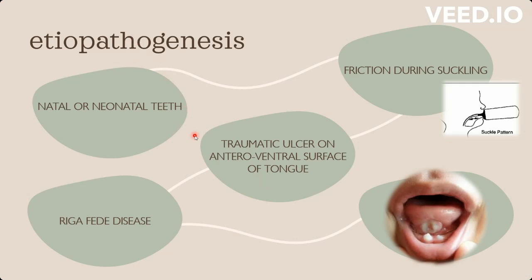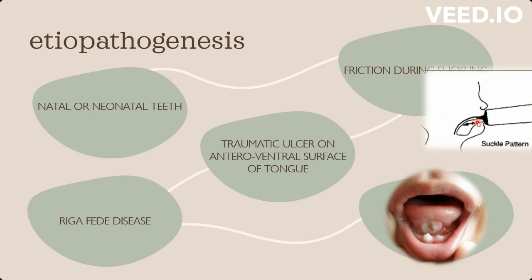The etiopathogenesis of Riga-Fede disease is due to the presence of natal or neonatal teeth during suckling. When the infant protrudes its tongue to form a seal, friction occurs between the tongue and the underlying teeth, causing a traumatic ulcer on the ventral surface in the anterior region. This is called Riga-Fede disease or Riga-Fede syndrome.